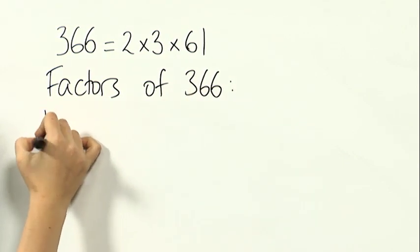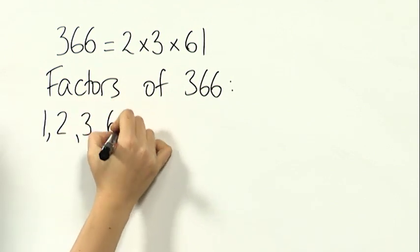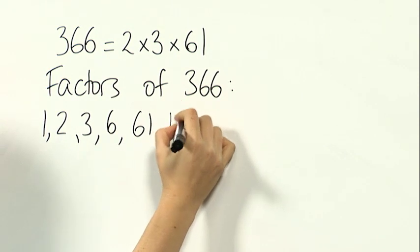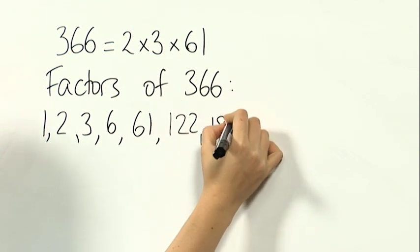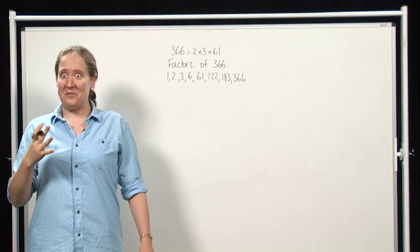So there's 1, where we don't include any of them, 2, 3, 6, and 61, 122, 183, and 366. And there are indeed 8 of those, which is good.